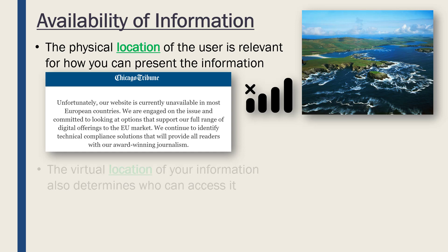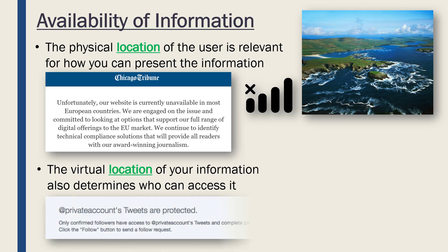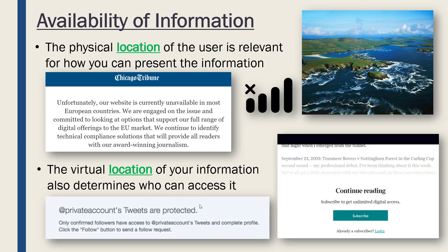It's not only the physical location which is relevant — the virtual location of your information will also determine who can access it. For example, you might be making a social media account for your business, but most social media allow you to make it private so only so many people can view the information you are tweeting, which limits who can view it because it's located in a private area. In a similar sense, if you're trying to read an article which isn't blocked totally, many websites will now prompt you to subscribe or log in before you can view the information. That affects availability — it's available, but only via going to a special members-only location.